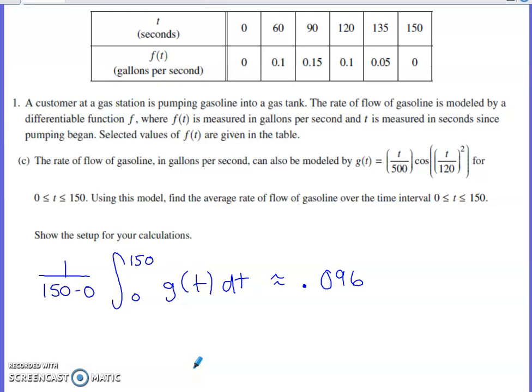Part C goes a different direction. They now kind of shift it to an analytically defined problem. So they say the rate of flow of gasoline in gallons per second can also be modeled by this new function g(t). And that holds on the interval from 0 to 150. Using this model, find the average rate of flow of gasoline over the time interval 0 to 150. Show the setup for your calculations.